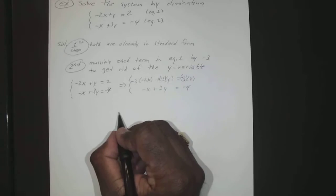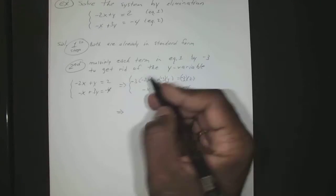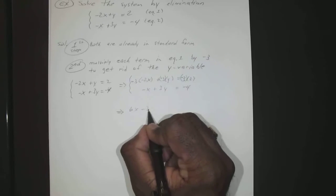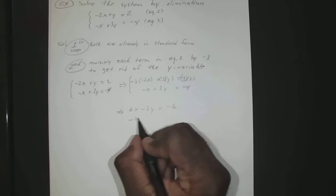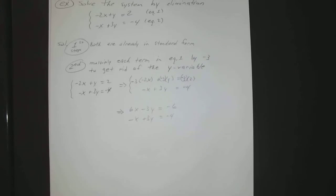Okay, so if we go ahead and simplify those, -3 and -2 is positive 6, so I have 6x - 3y = -6 and -x + 3y = -4.